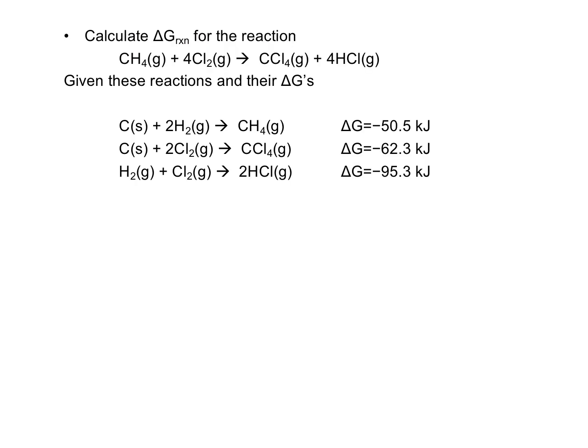In this example, we want to determine the delta G for this reaction, and they've given us these reactions and their delta G's. What I want to do is rearrange these reactions — either flip them or multiply them by constants — and then add them together so that they add up to the reaction I'm looking for. Whatever I do to the reactions, I'll do the appropriate things to the delta G's.